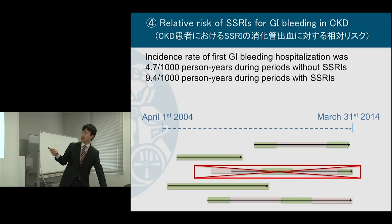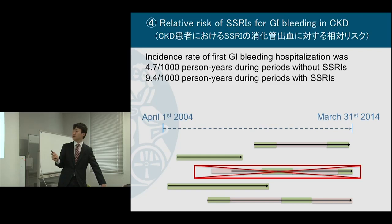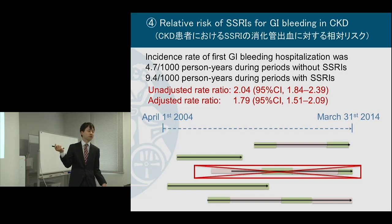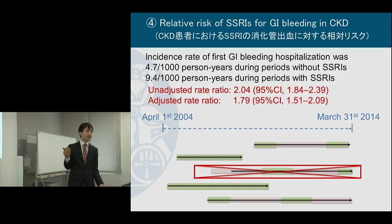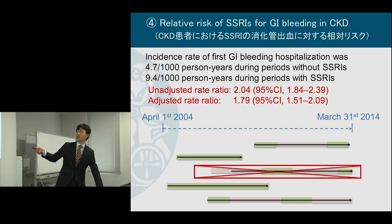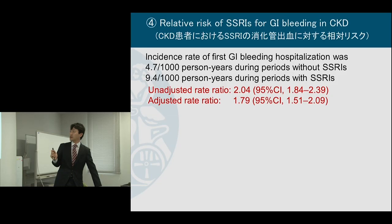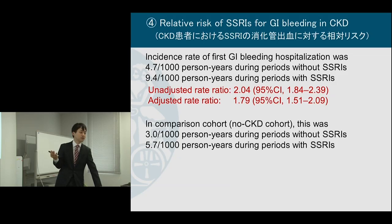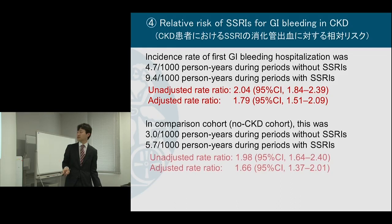The incidence rate of first GI bleeding was 4.7 per 1000 during the green period and 9.4 during the pink period. Conducting survival analysis by Poisson regression — or Cox regression — gave a crude rate ratio of 2.04. After adjusting for time-dependent confounders like NSAIDs, warfarin, aspirin, and antacid drugs, this became 1.79. In the non-CKD cohort from my first paper, the rates were 3.0 and 5.7, with adjusted rate ratios of 1.98 and 1.66.